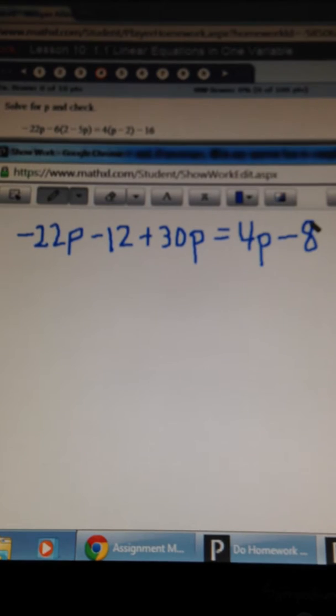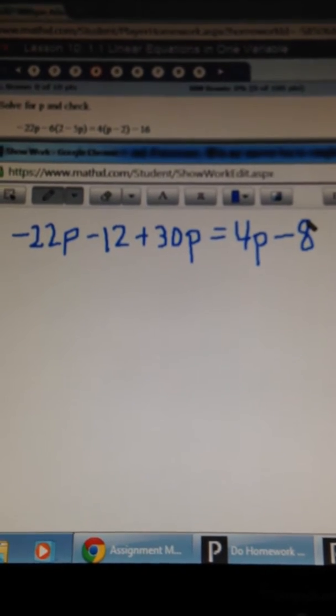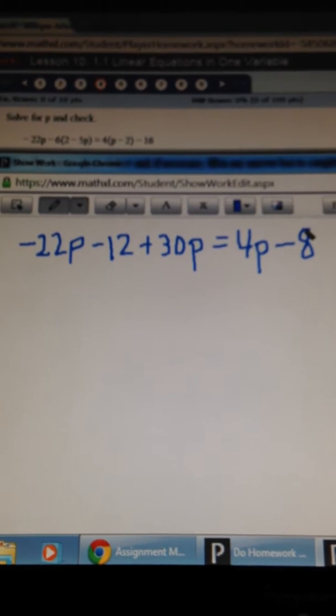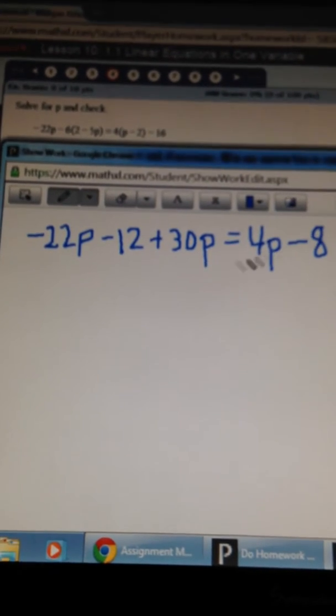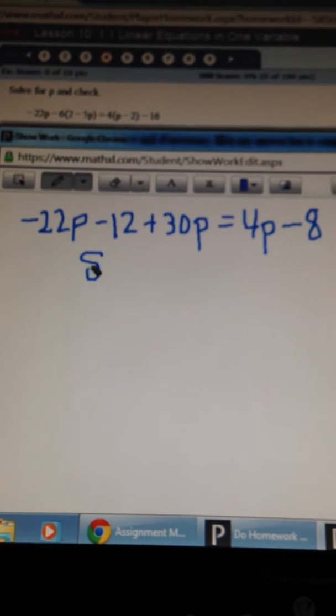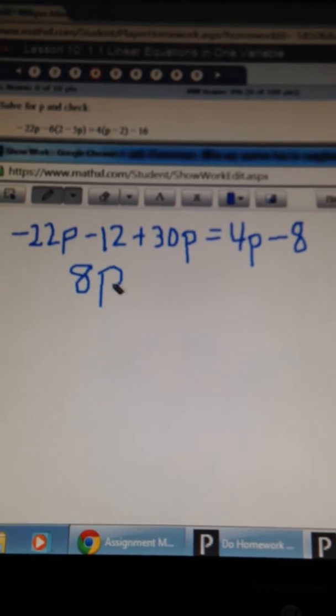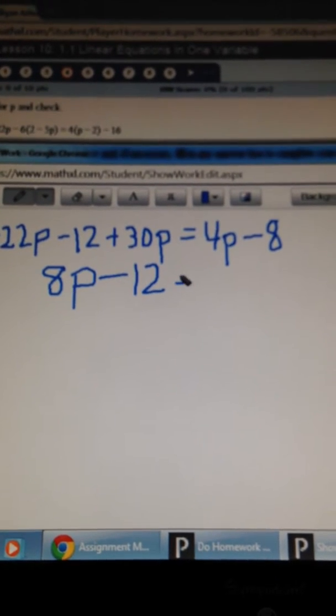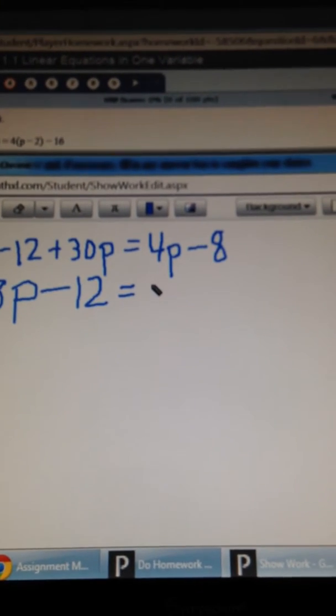Alright, now the next step, left hand side, combine your like terms. So negative 22p plus 30p will give you 8p. So we have 8p minus 12. Bring down the right hand side.